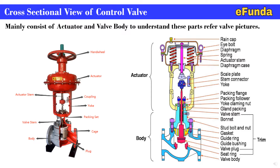These control signals traditionally are based on either 3 to 15 psig — that is, 0.2 to 1 bar. More commonly nowadays, 4 to 20 milliamp signals are used in industry. This is generally 0 to 10 volt for HVAC systems. Smart systems like HART, Foundation Fieldbus, and Profibus are more common protocols being used for transmission of signals to the control room.